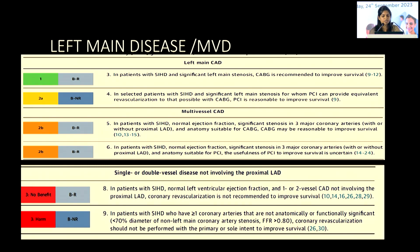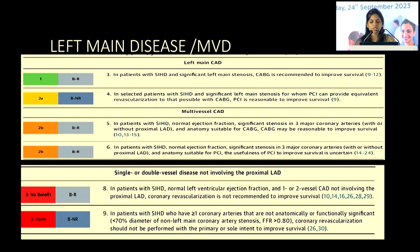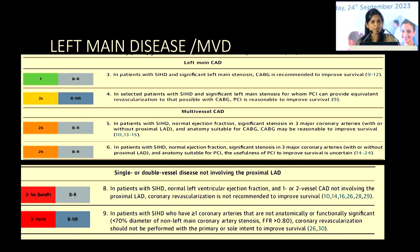For patients with significant left main stenosis and stable ischemic heart disease, CABG is recommended to improve survival, but PCI is also a reasonable option — this is where informed decision-making by the heart team comes in. For multivessel CAD involving three major coronary arteries with anatomy suitable for CABG, CABG should be considered. If the proximal LAD is not involved in single or double vessel disease, medical management can always be tried first.